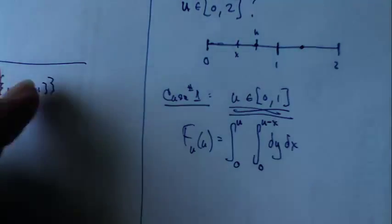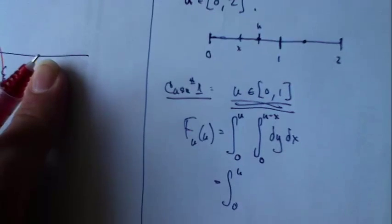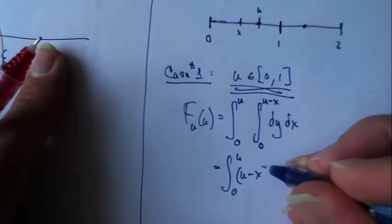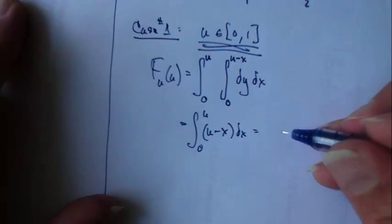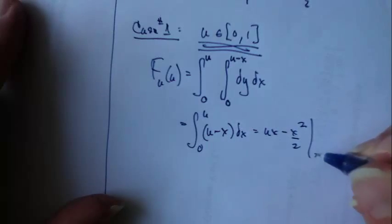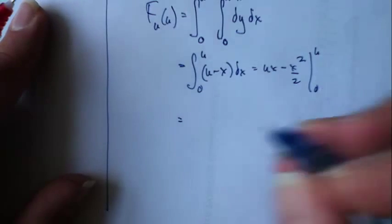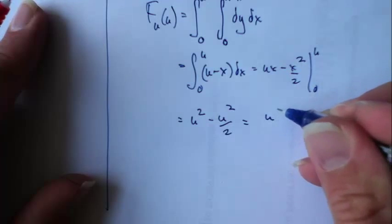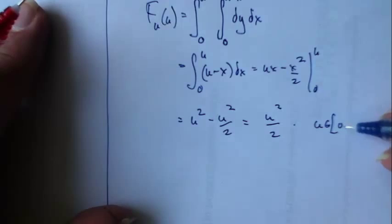Let's work this out. This is going to be integral 0 to u of - I get a y there - just u minus x with respect to x. Then this becomes u x minus x squared over 2 from 0 to u. And then I get u squared minus u squared over 2, or just u squared over 2. And again, this is for u in 0 to 1.